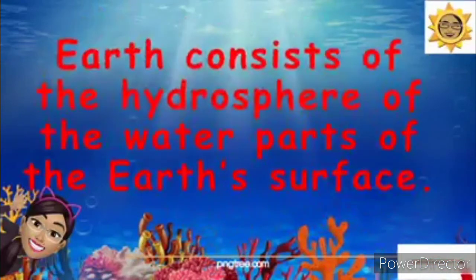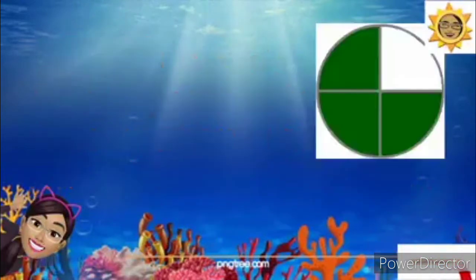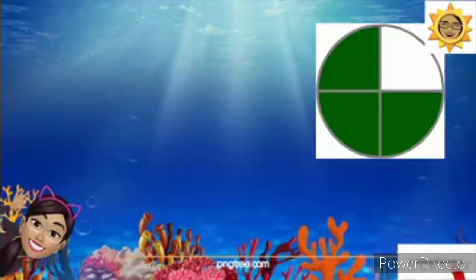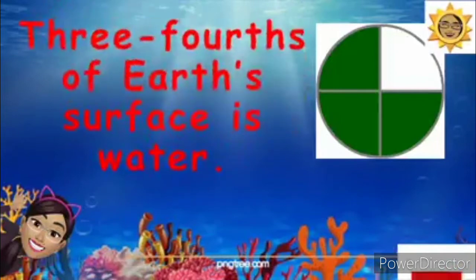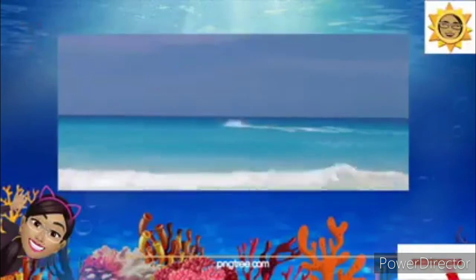Earth consists of the hydrosphere — the water parts of the earth's surface. So, as you can see in this picture, the green one is the water and the white one is the land. Pretend that this is the earth. That green part is three-fourths of the earth's surface — it is water.